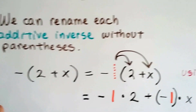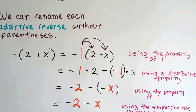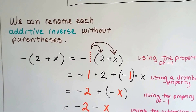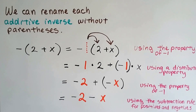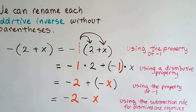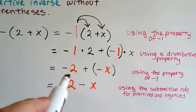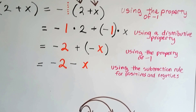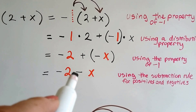We can rename each additive inverse without parentheses. Imagine we've got negative and then 2 plus x. Our friend the invisible 1 is there — that's the property of negative 1. In between a negative sign and a parenthesis, the invisible 1 is there. We distribute it to each term inside: negative 1 times 2 plus negative 1 times x, using the distributive property. Then using the property of negative 1 again, negative 1 times 2 is negative 2, and negative 1 times x is negative x. Using the subtraction rule for positives and negatives, that gives us negative 2 minus x.